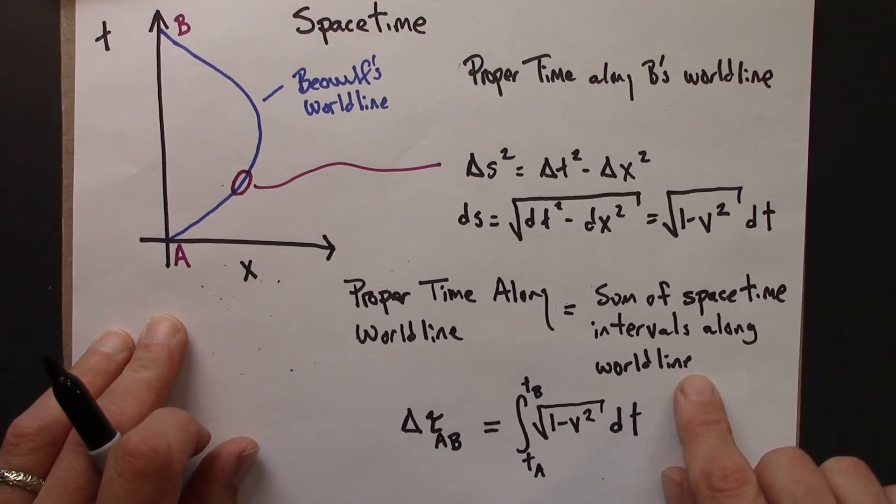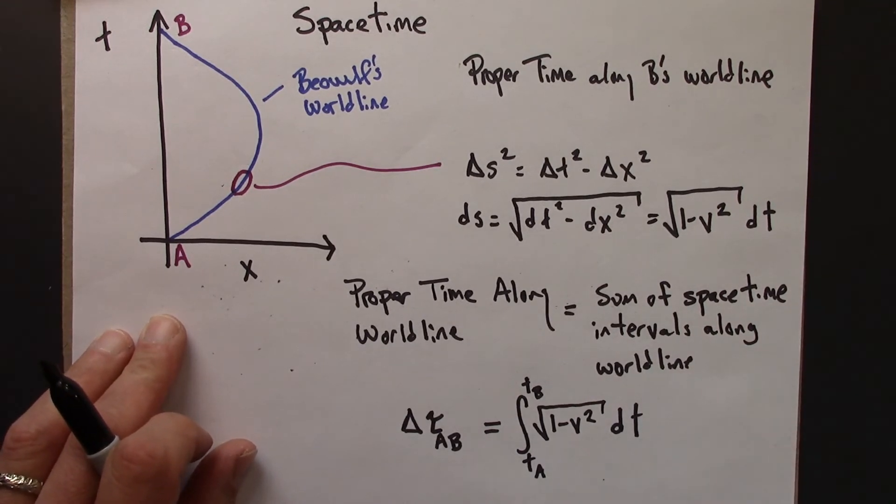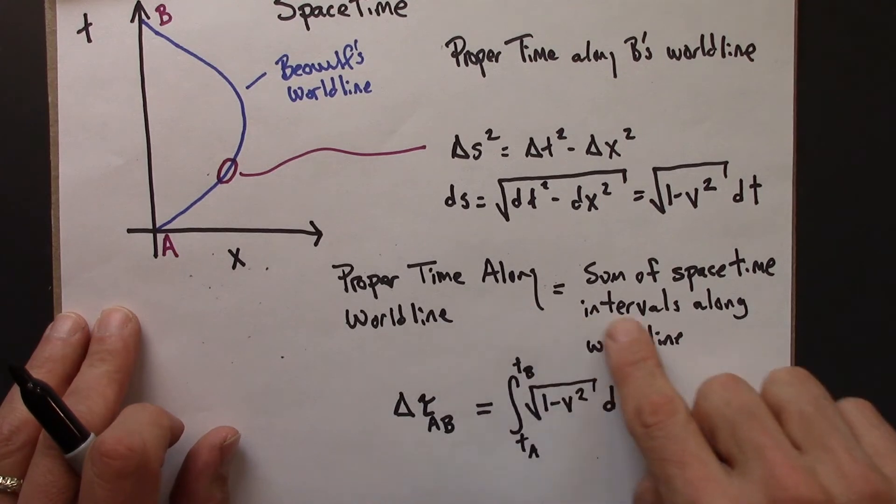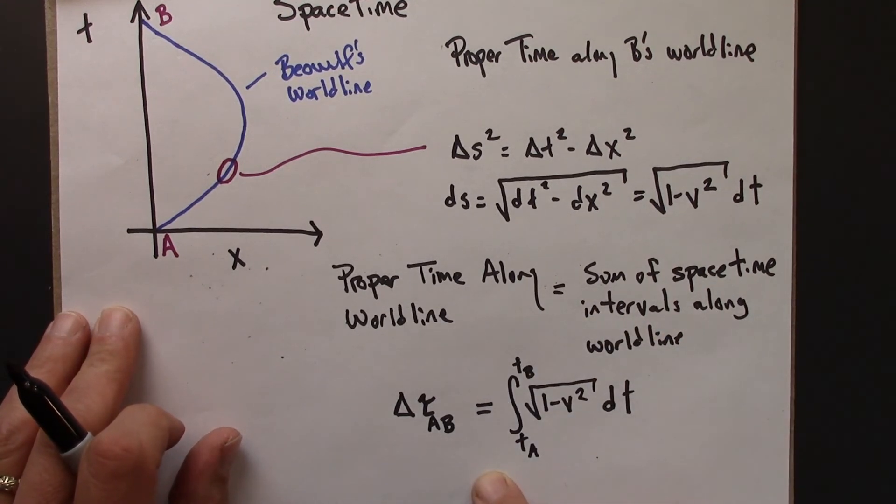If we do that, we can express that using calculus, like this. This is the definite integral of 1 minus v squared square root, from ta to tb.